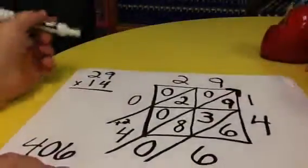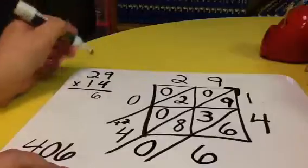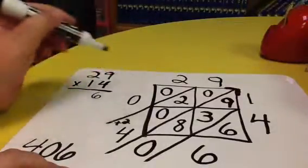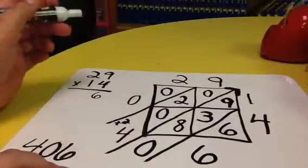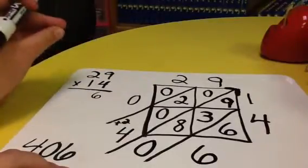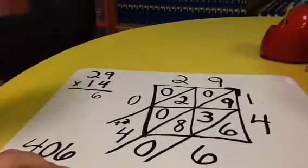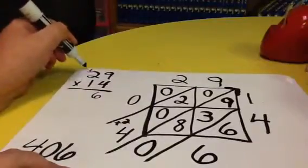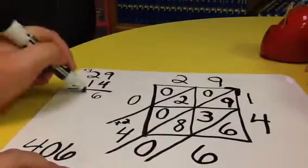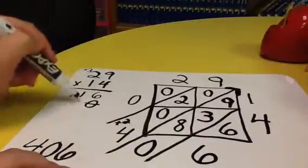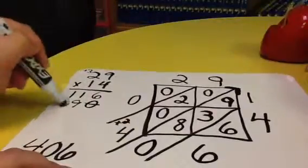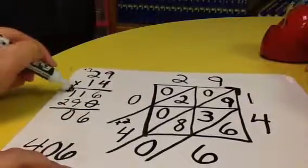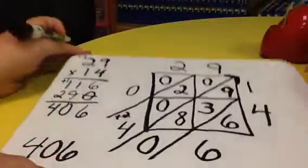I told the students we can check ourselves by doing the standard algorithm if this is easier for them. Again, these are just different strategies to figure out how to multiply a two-digit number by a two-digit number, and they are to use whichever strategy works best for them. We got the same number, so that's right.